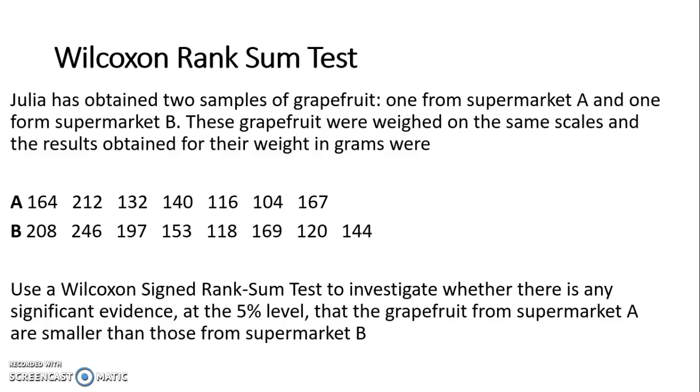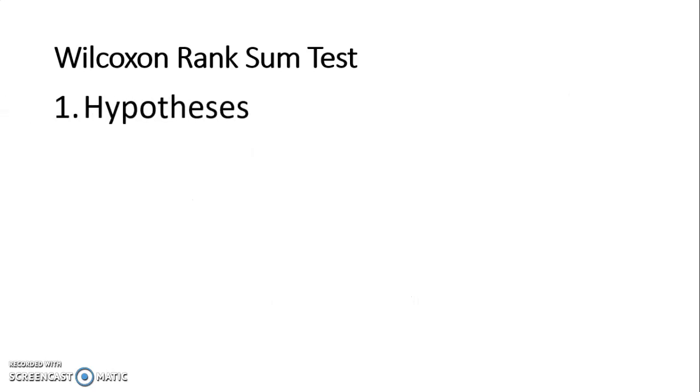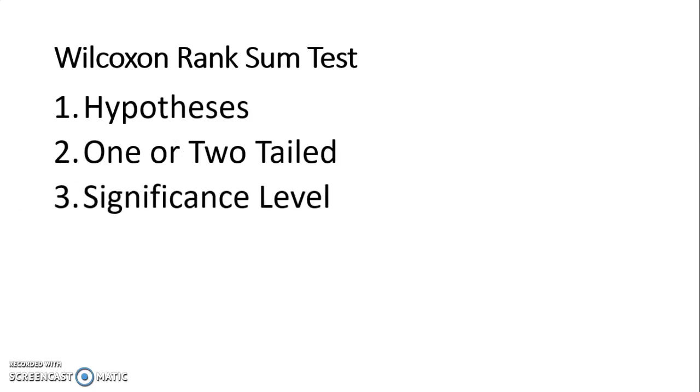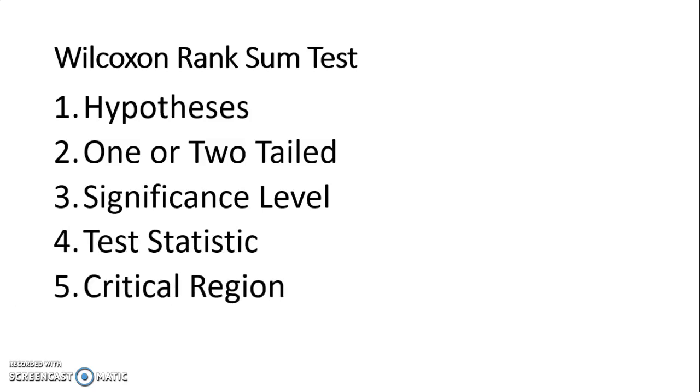With any hypothesis test, we need to follow our six steps. So the first one is to write out our hypotheses. Then we use those to state if it is one or two tailed and the significance level. We calculate the test statistic. We find the critical region. And we compare and conclude.